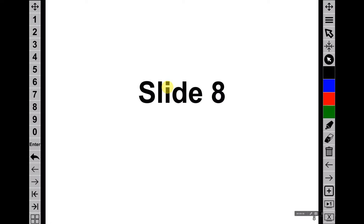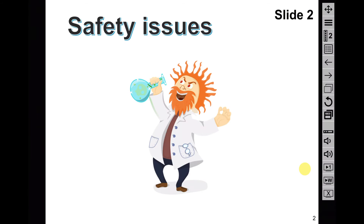Shown here are the default configurations of the two toolbars, but again, these two toolbars can be completely customized independently. Here's an example of a very different configuration of the two toolbars, which I'm going to use to illustrate some of the new functions of the program. In this example, the first toolbar has been set to be vertical and includes several different buttons that are not available in the default configuration of the program.